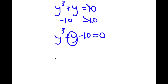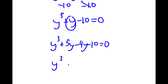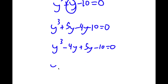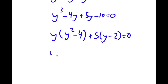I'm going to rewrite y here as 5y minus 4y. So I rewrite this in the form y to the power of 3 minus 4y plus 5y minus 10 is equal to 0. I can factor out y, so y times y squared minus 4 plus 5 times y minus 2 is equal to 0. And y squared minus 4 is the same thing as y plus 2 times y minus 2.